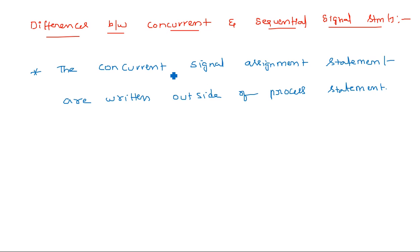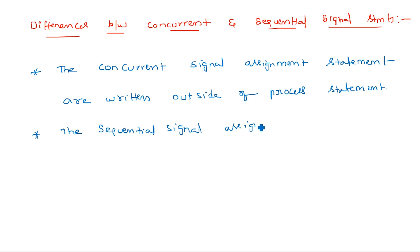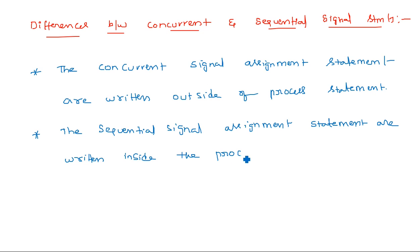Whereas sequential signal assignment statements are written inside the process statement. This is a very important point to remember: if a process is present, that comes under behavioral modeling. If there is no process, then it comes under concurrent signal assignment statements.